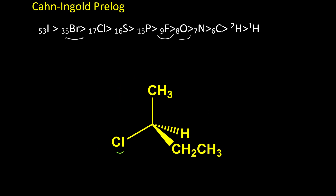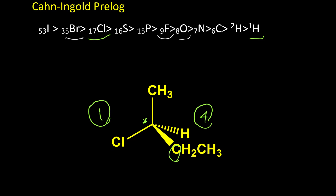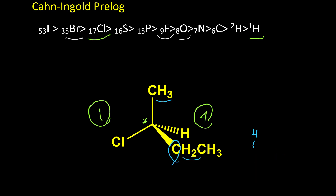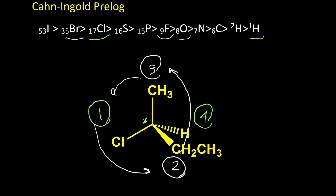Here is the next example. We have chlorine, hydrogen, carbon, and carbon. Chlorine is number one and hydrogen is number four. But right now we have two carbon atoms for these two groups, and we need to see which one has higher priority. When the first atoms are the same, we take a look at the second atom and keep going until we see a difference between the two groups. In CH3, after carbon we have hydrogen. But here after carbon we have carbon and hydrogen — it's CH-CH-CH3 — so the first carbon is attached to another carbon. So between these two, the second one has higher priority: number two. Then from number one to two to three, the rotation is counterclockwise and the configuration of this molecule is S.